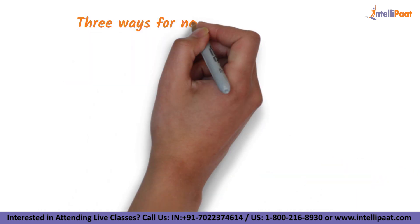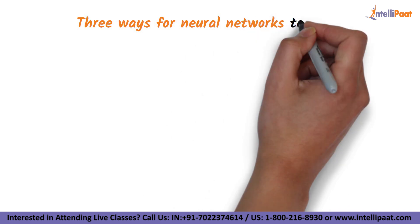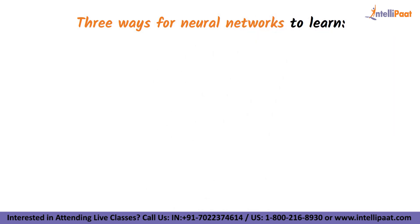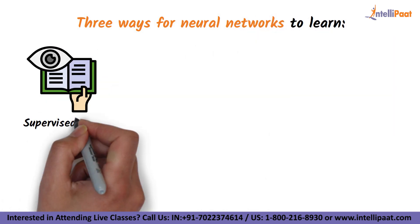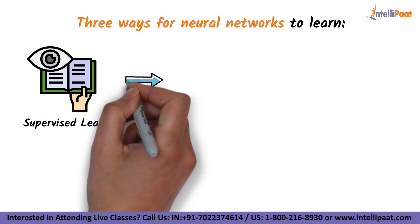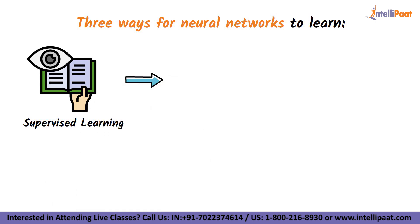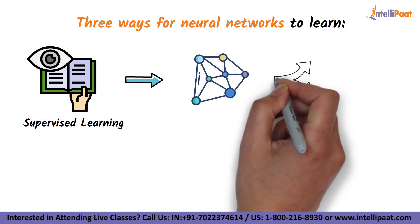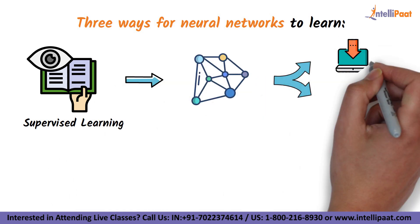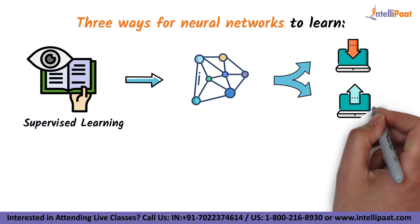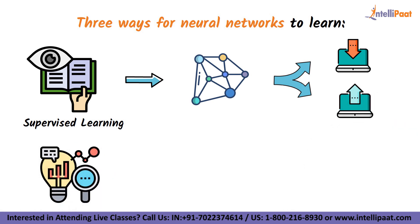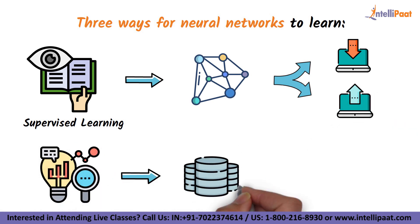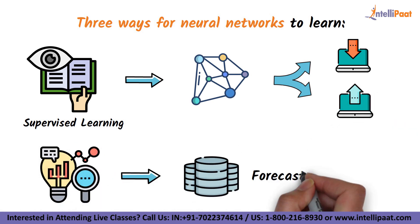Let's see the different ways for neural networks to learn. First is supervised learning. Supervised learning comprises feeding the algorithms a set of inputs and outputs. After being trained on how to analyze the data, they forecast the outcomes.